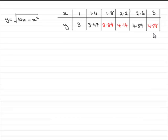But for the next part, what we've got to do is work out the integral. Let's just put it in—get an approximation, that is, for the integral from 1 to 3 of the square root of 10x minus x squared by using the trapezium rule.